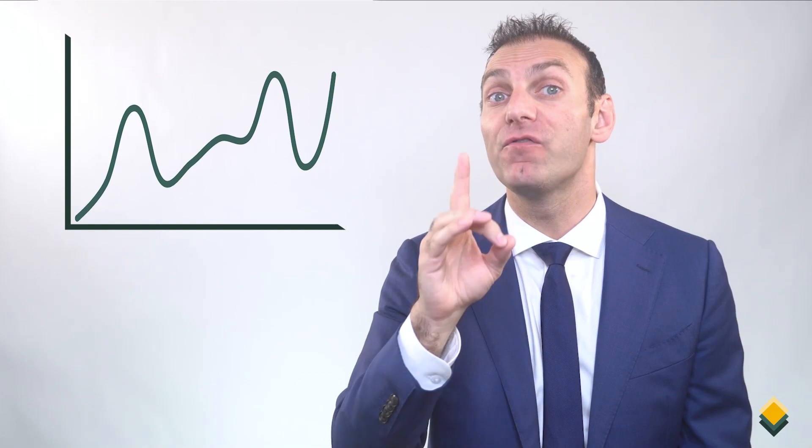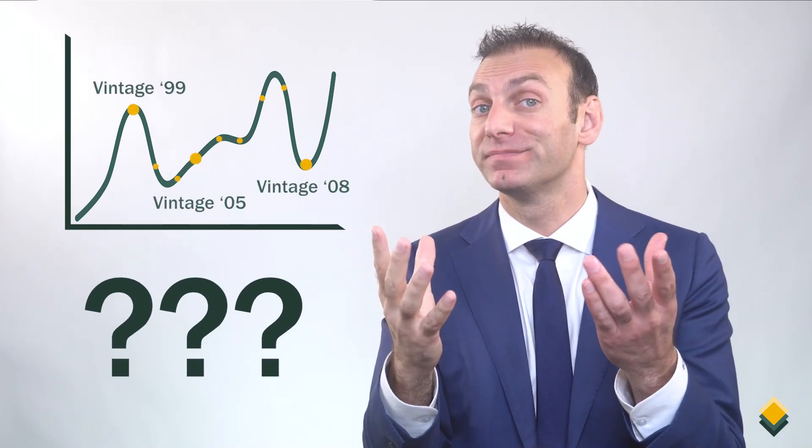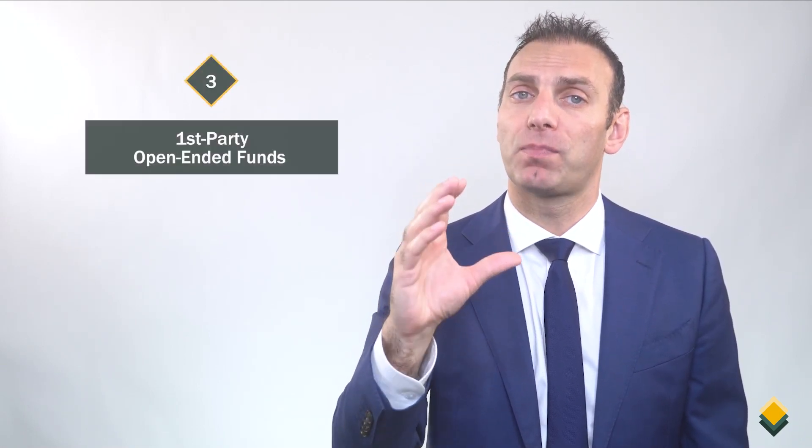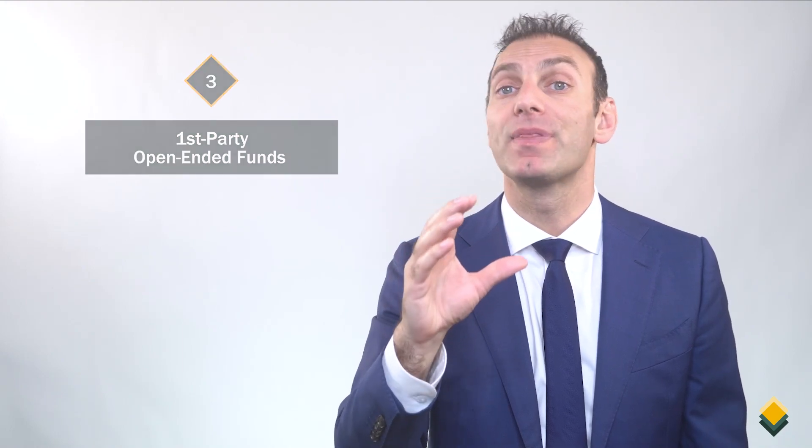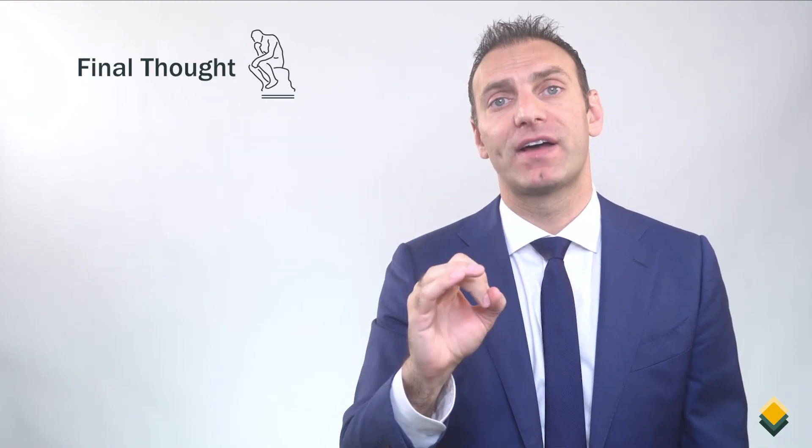So how do we diversify across vintages? I'm glad you asked. In this video, we will talk about three ways to diversify across vintages in private equity to help you mitigate vintage risk. We will talk about building a private equity program, third-party evergreen funds, and first-party open-ended funds. And we'll end the video with a final thought.